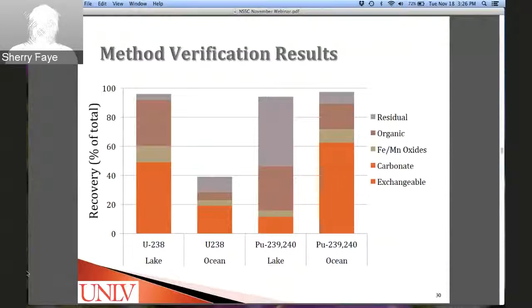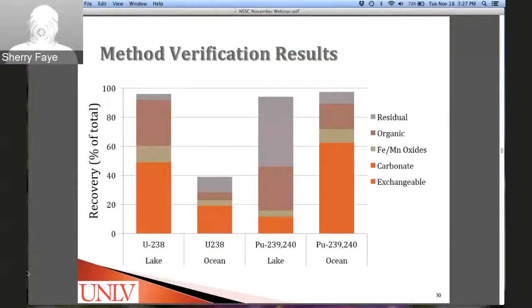Method verification results show nearly 100% recovery for uranium from lake sediment and plutonium from both lake and ocean sediment. Uranium recovery from ocean sediment is only about 40%. Regarding mobility: extraction in the first three target phases — exchangeable, carbonate, and iron/manganese oxides — represents higher mobility of that actinide in the sediment. Uranium in ocean sediment is therefore the least mobile and least concerning for bioavailability. Uranium extraction from lake sediment is high in the carbonate phase, suggesting uranium complexing with carbonate, and significant uranium in the organic phase reflects the sample's high organic content.